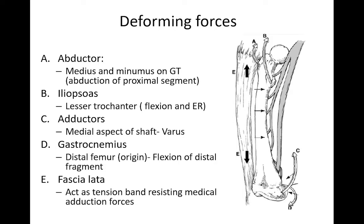After a fracture, there are many deforming forces which act on the bone. The abductors — the gluteus medius and minimus, which insert on the greater trochanter — cause abduction of the proximal fragment. The iliopsoas inserts on the lesser trochanter and causes the proximal fragment to go into flexion and external rotation. The adductors, which insert over the medial aspect of the shaft, have a tendency to take the fragment into varus.